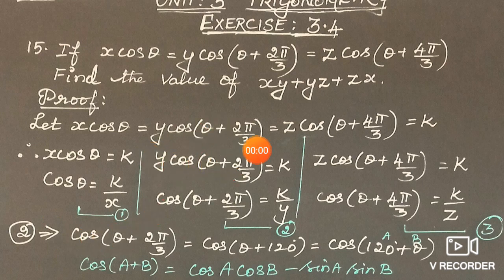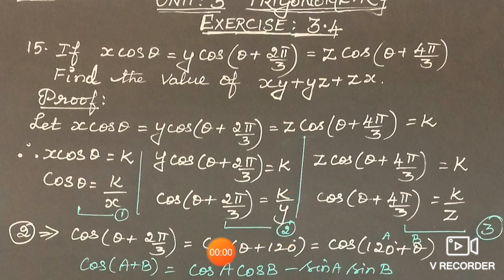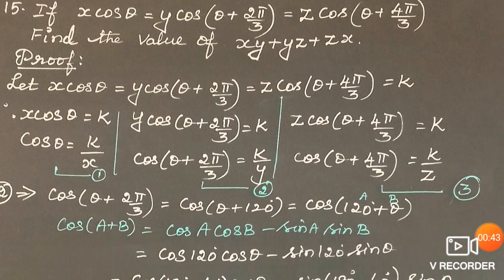Similarly, y·cos(θ + 2π/3) = k, so cos(θ + 2π/3) = k/y. Name it as equation 2.